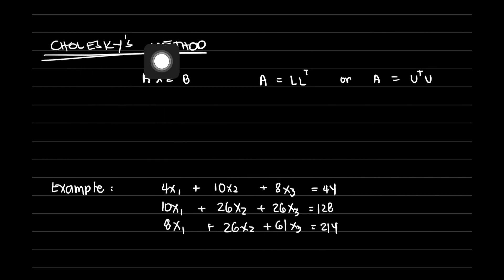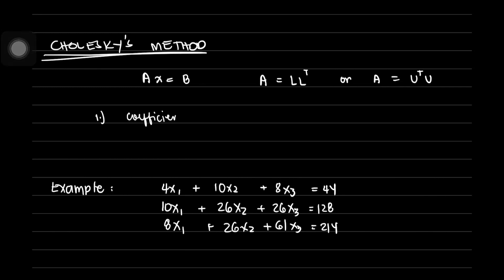We can use Cholesky's method if the coefficient matrix is symmetrical — meaning whatever you see on the first row, you will see on the first column; whatever you see on the second row, you will see on the second column; and whatever you see on the third row must be seen on the third column. Also, the coefficient matrix must be a positive definite matrix.